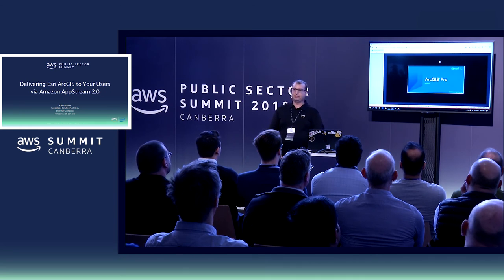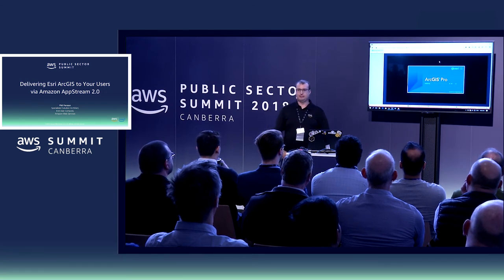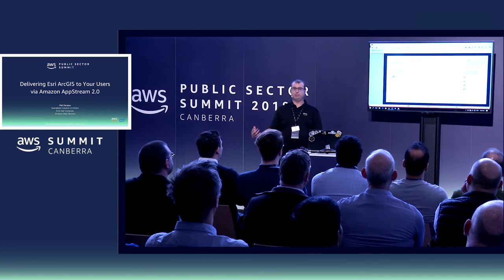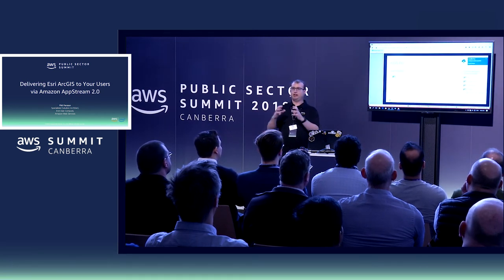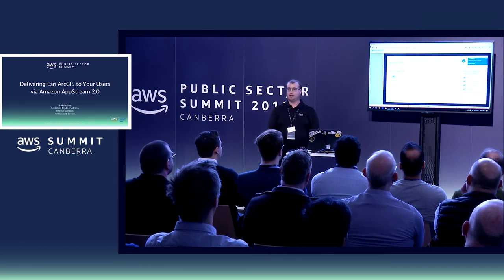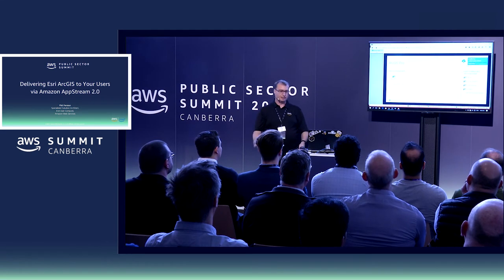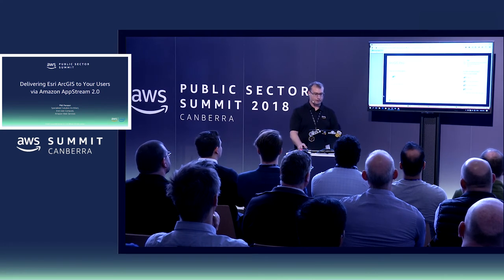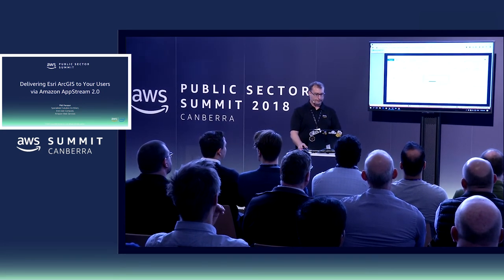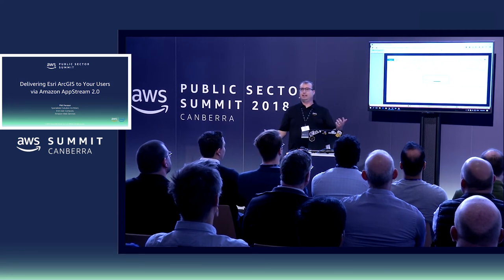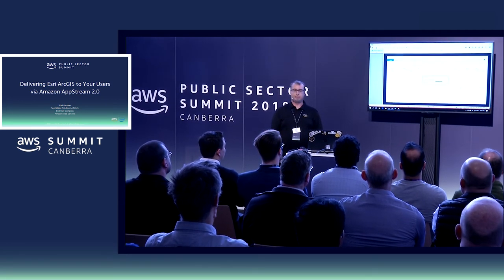Essentially what I'm doing, in the simplest form, is connecting to a VM that's hosted inside AWS. That VM is just showing me that particular application rather than everything around it. So I don't see the start menu. I don't see any other applications other than what's specifically been allowed to me by my administrators.